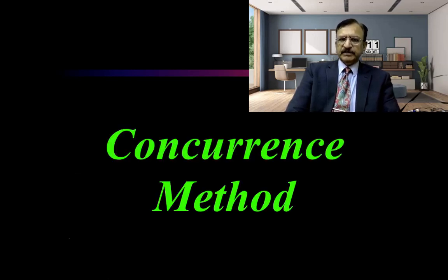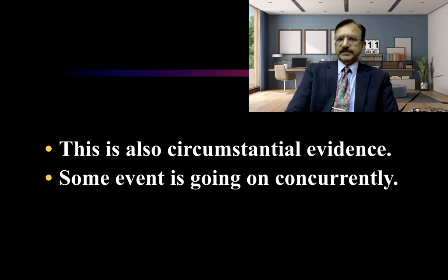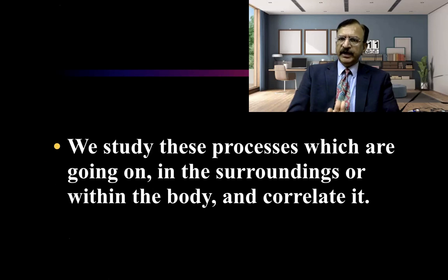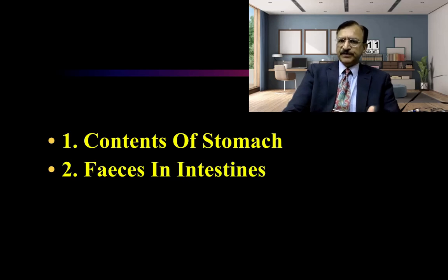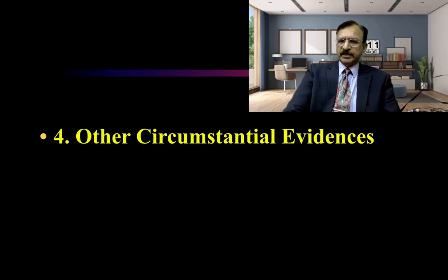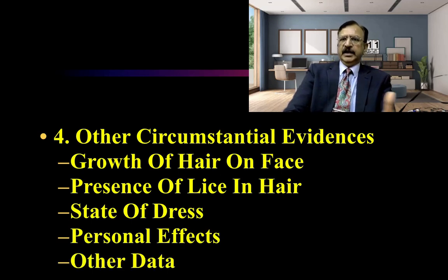Continuing with the concurrence method — this relies on circumstantial evidence where some event is going on concurrently, either a process within the body or in the surroundings. We correlate that phenomenon in relation to time since death. Examples include the contents of the stomach, presence or absence of feces in the intestine, amount of urine in the urinary bladder, growth of hair on the face, presence of lice in the hair, the state of dress, personal effects, and other data.